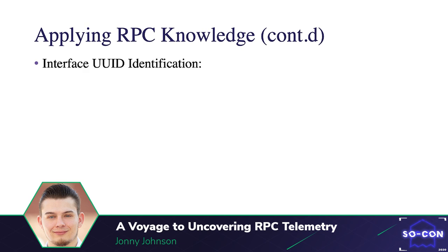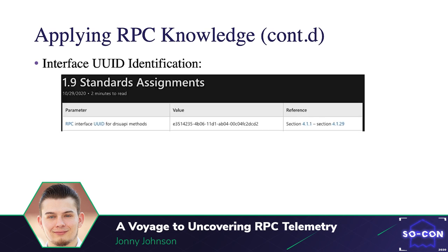The first thing I wanted to do was take my research and apply it to DC Sync. First, I identified the UUID for the interface — given to us by Microsoft documentation. Not everything is given by Microsoft documentation, so I also used NT Object Manager, Procmon, ETW, Wireshark, and other tools.